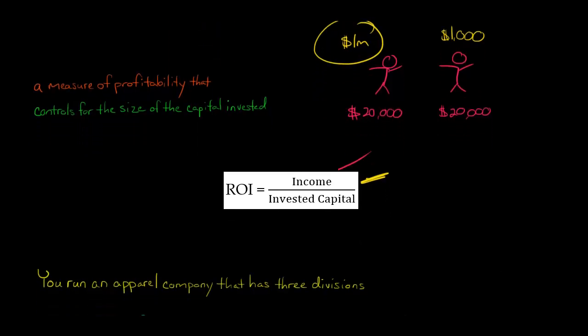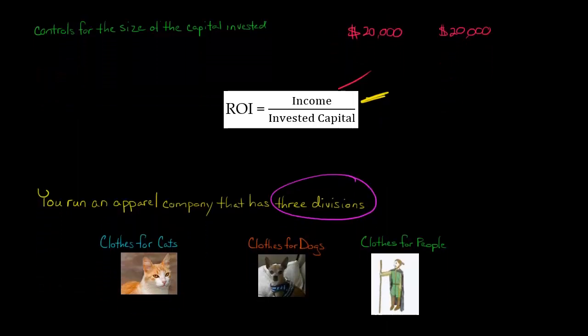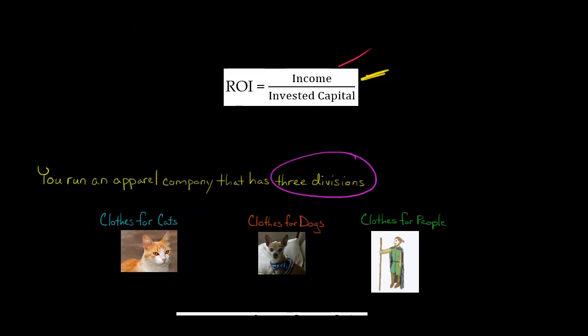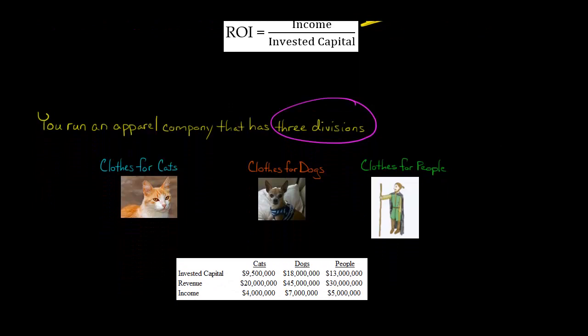So let me show you a more in-depth example. Let's say that you run an apparel company, so you make clothing, and you have three different divisions that you evaluate the profitability of. You have a division that makes clothing for cats, and then you have one that makes clothes for dogs, and one that makes clothes for people. And there are three different divisions that are evaluated based on their profit or loss. And let's say that each of these divisions here earned a profit for the year. So I'm just going to call it income. That's the profit of each division.